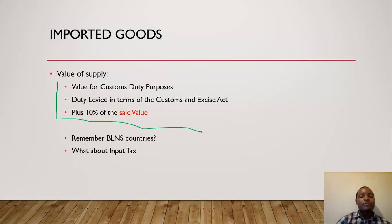The value of supply for imported goods is quite simple but a nice calculation that can earn you a lot of marks if you understand and present it well. You take the value for customs purposes, this is the value that customs authorities use to calculate their customs duty. Then you add 10% of the value of customs. Then after that, you add the duty that is payable in terms of the Customs and Excise Act. Then after that, you multiply by 15%. Why are we multiplying by 15% and not 15 over 115? Because we are using the value of supply and not the consideration.